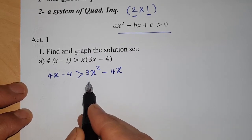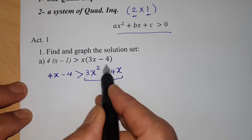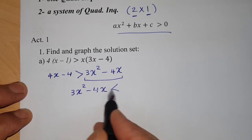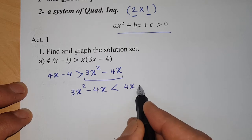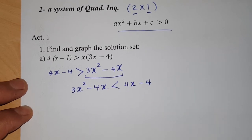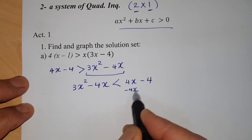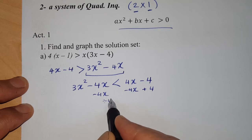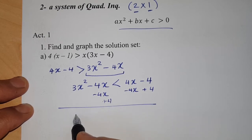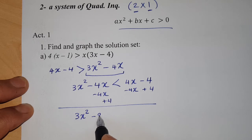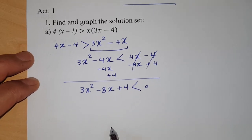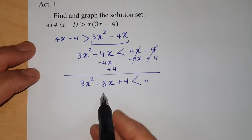I want the left-hand side to be the standard side, so I rewrite the inequality as 3x² − 4x < 4x − 4. Now remove 4x from both sides and add 4 to both sides, giving 3x² − 8x + 4 < 0.